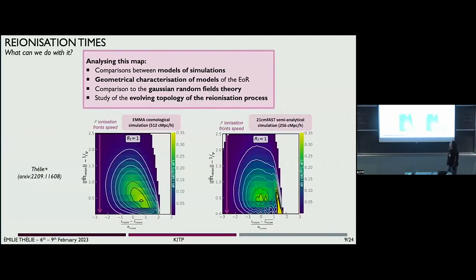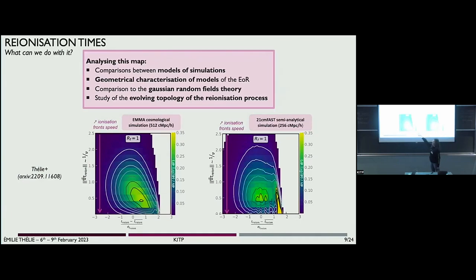With this kind of map, we can compare different models of simulations. For example, on one axis you have the gradient of reionization times — the inverse of the de-ionization front speed — and the normalized reionization times. There you have the cosmological simulation map, and there you have the semi-analytical simulation map, and you can see that there are some differences between these two maps. So with this map, we can probe the difference between different kinds of simulations.